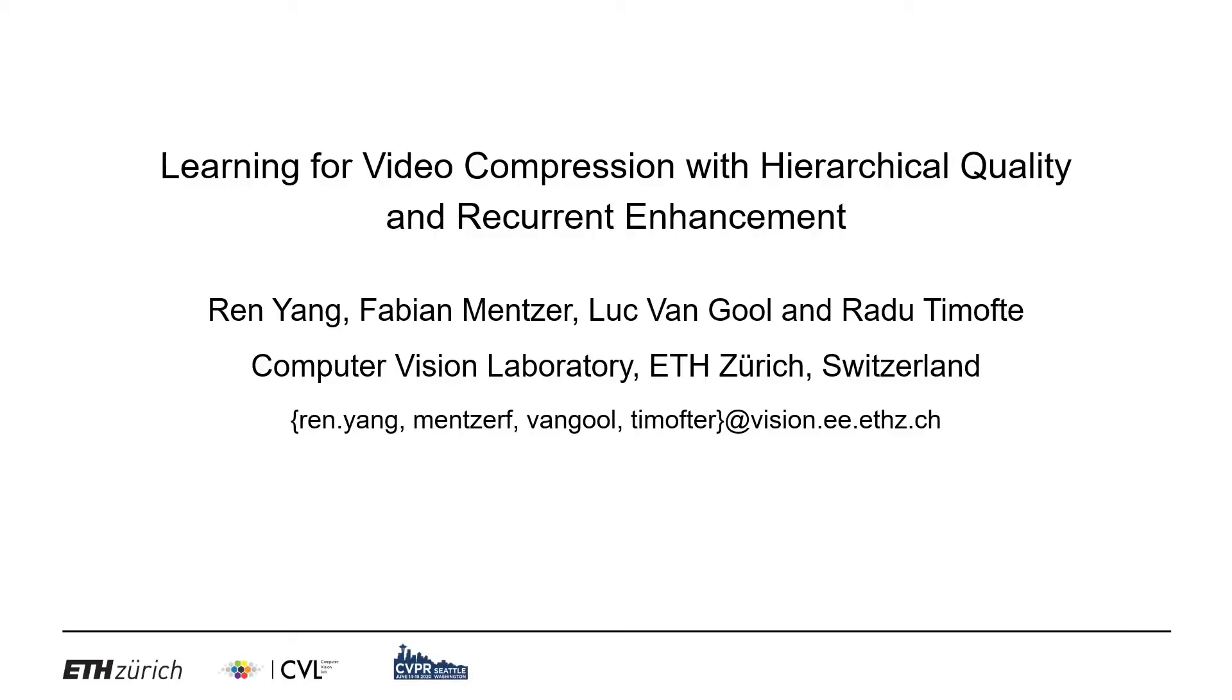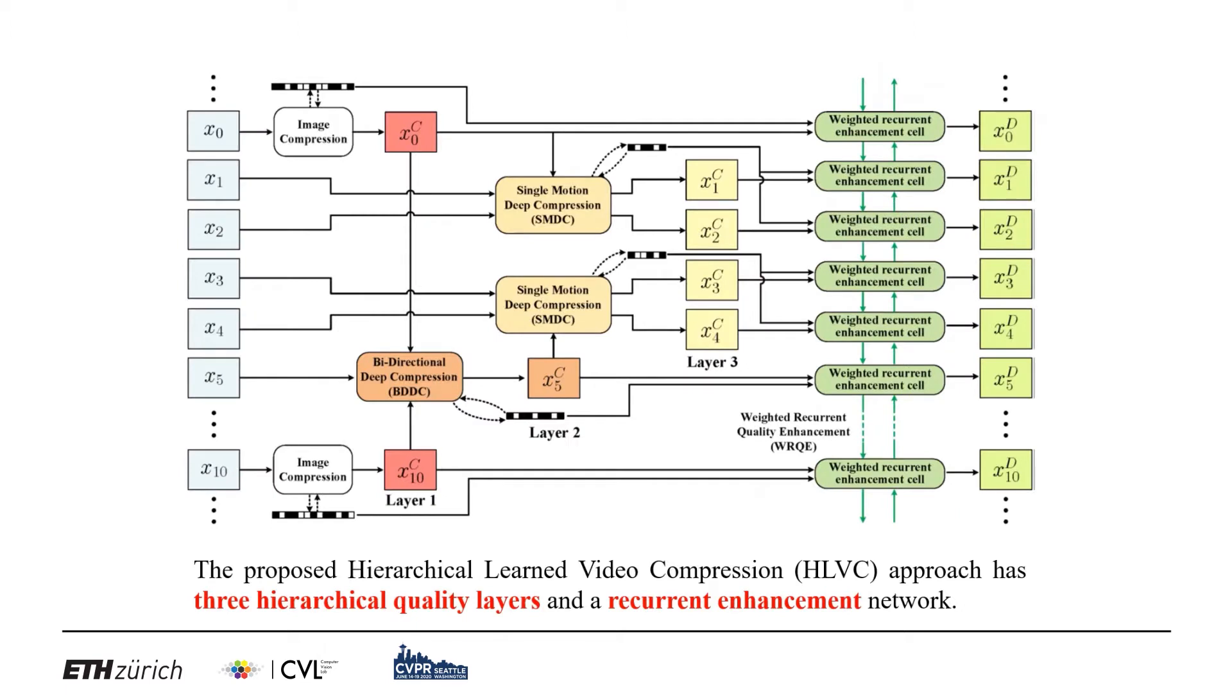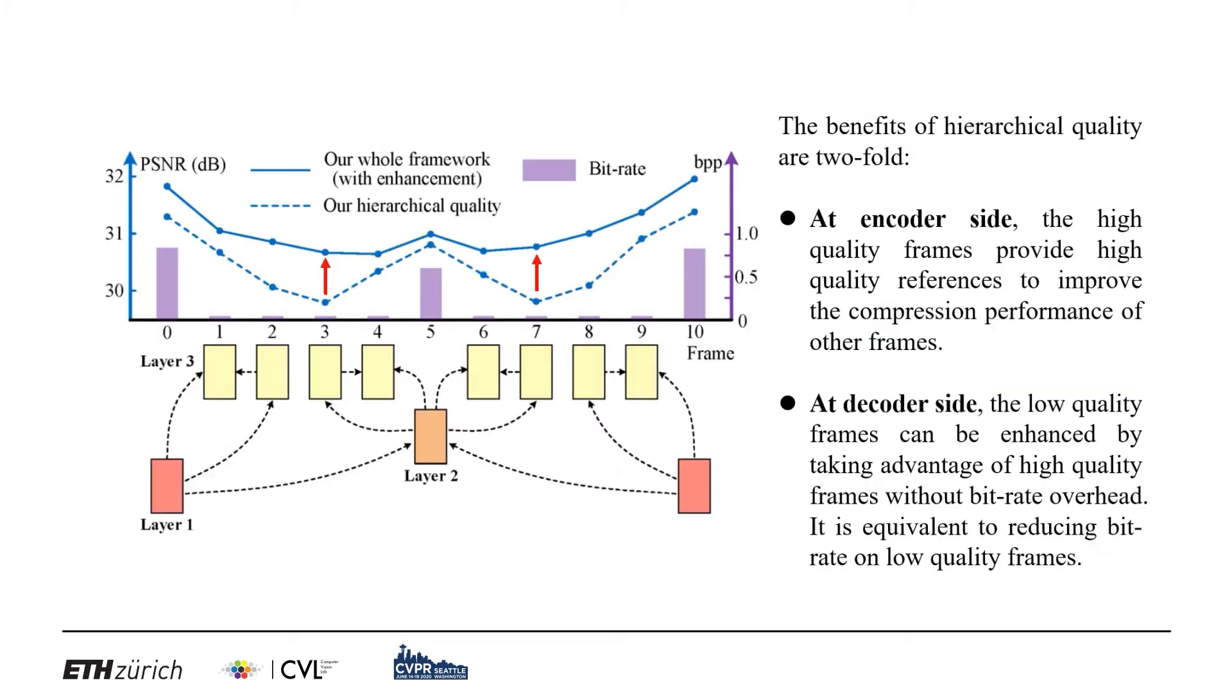This paper proposes a learned video compression approach with hierarchical quality and recurrent enhancement. The proposed framework has three hierarchical layers compressed with high, medium, and low quality respectively. At the decoder side, a recurrent enhancement network is utilized to improve the compression quality. At the encoder side, the high-quality frames provide high-quality references to benefit the compression of other frames.